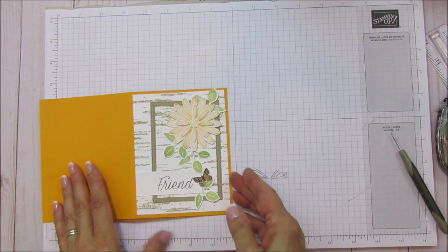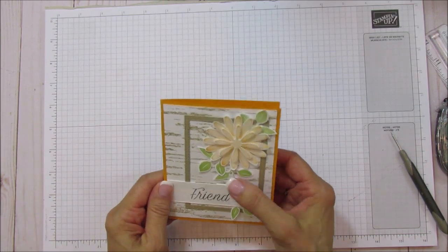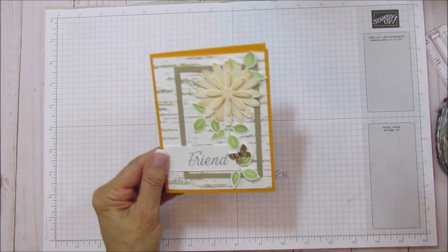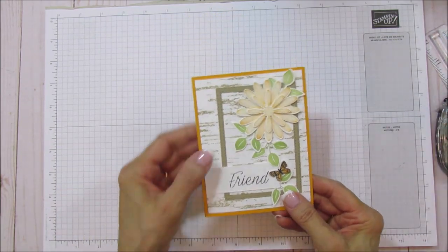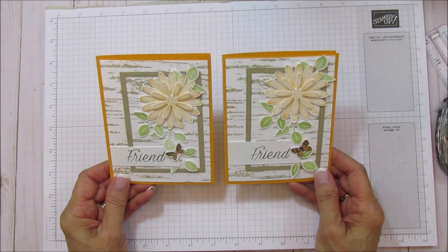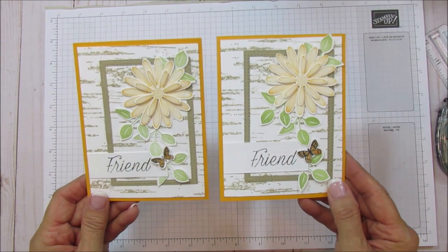So it's really quick and easy because you have the punches. And so that is it. The only thing you need the Big Shot for is your frame, but you can also cut that out by hand. Here's the other one. So there you have it.